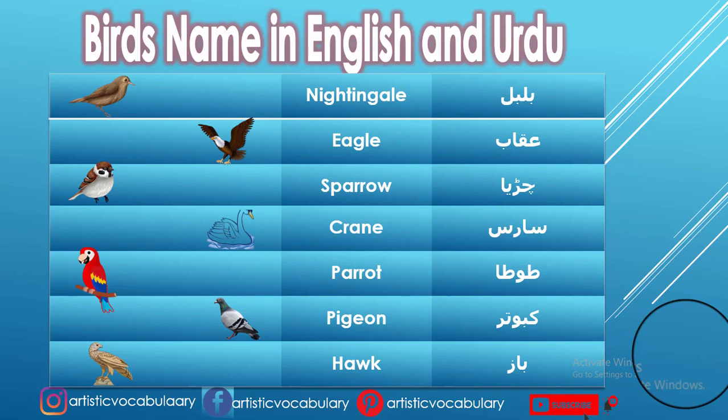Chirya — in English we call it Sparrow. Sarus — in English we call it Crane.